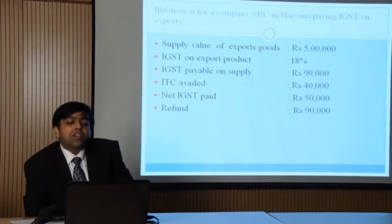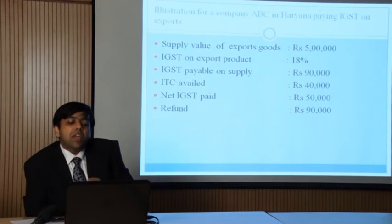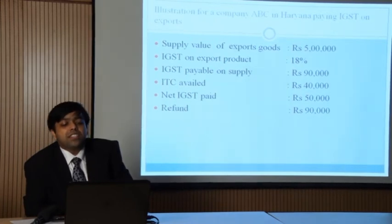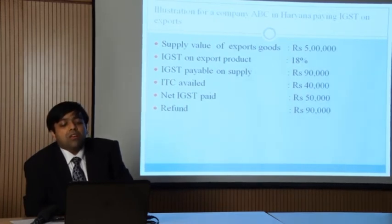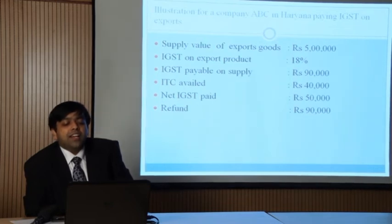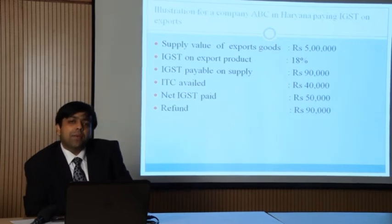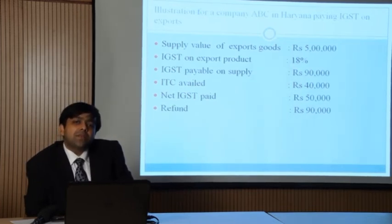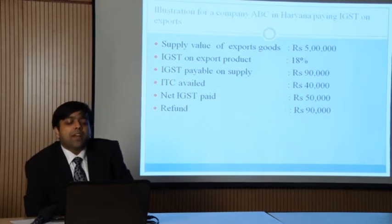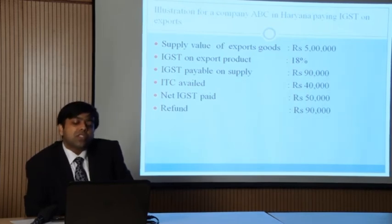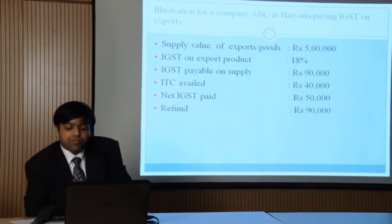Another example: ABC is in Haryana paying IGST on export. Value of goods supplied is 5 lakhs, IGST on export product is 18 percent, so IGST payable is 90,000. Input tax credit availed is 40,000 and net IGST paid is 50,000. Therefore, the refund will be 90,000, which is the IGST payable on supply.